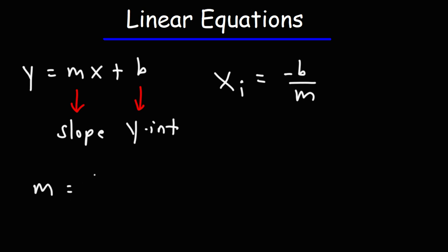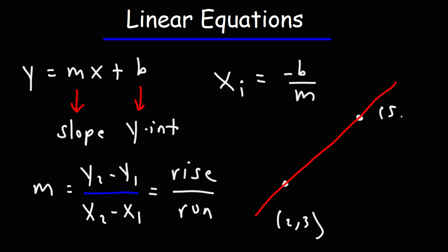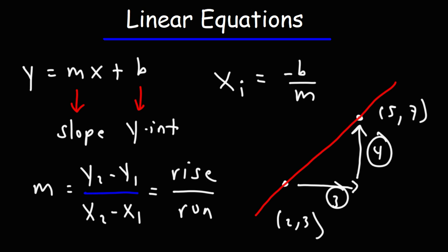If you need to calculate the slope and you have two points, you could use this formula: the slope is y2 minus y1 divided by x2 minus x1. The change in y-values represents the rise between two points, and the change in x-values represents the run. For example, with points (2, 3) and (5, 7): to go from 2 to 5 along the x-axis you travel 3 units, and from 3 to 7 along the y-axis you travel up 4 units. So the rise is 4, the run is 3, and the slope of the line is 4 over 3.